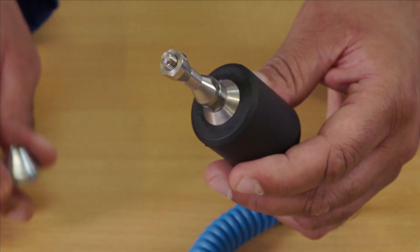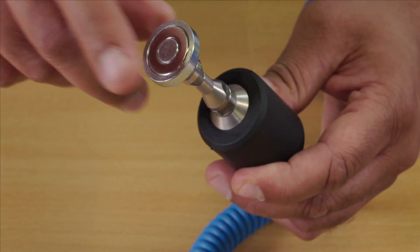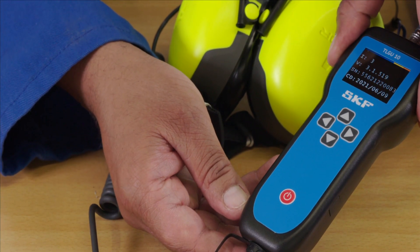Select the appropriate magnetic mount for your application and connect it to the sensor. Now press the on-off switch to activate the TLG-U10.